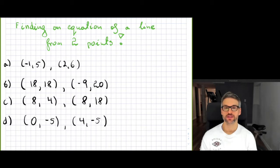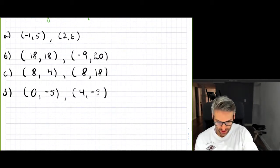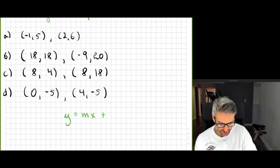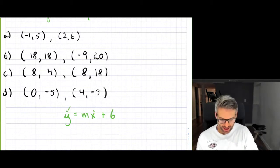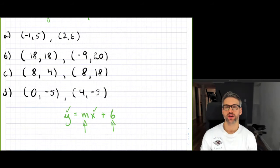For your equation of a line, think about it as y is equal to mx plus b. You have a relationship between y and x, and really the only thing you are looking for is the slope and then the y-intercept. But you have only two points.